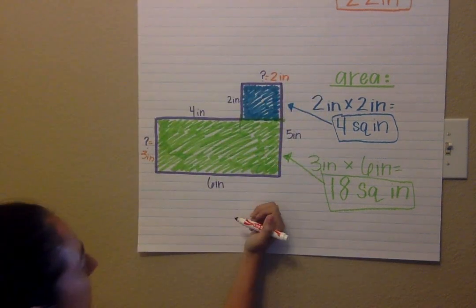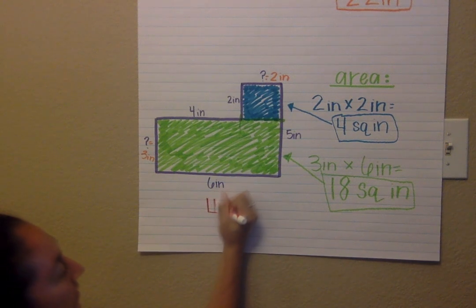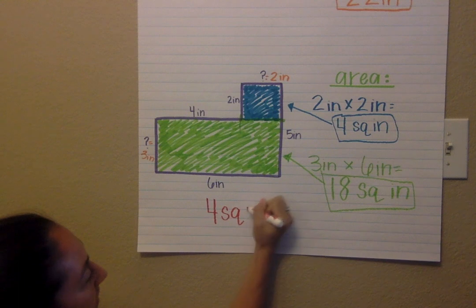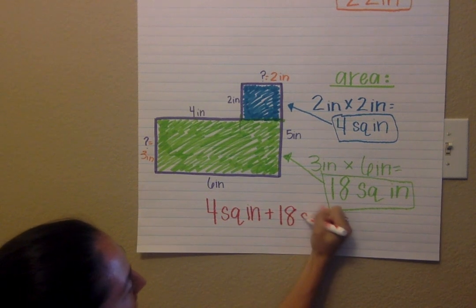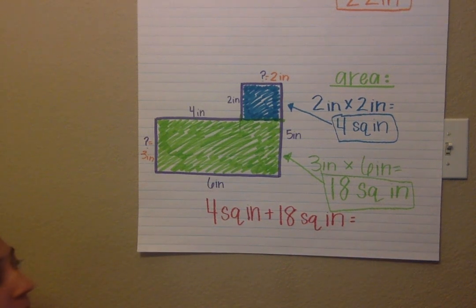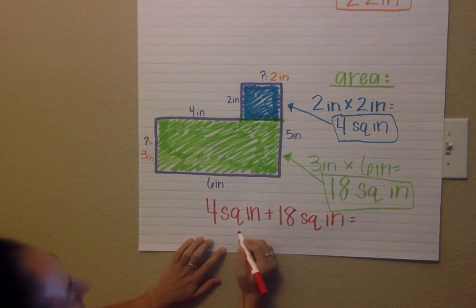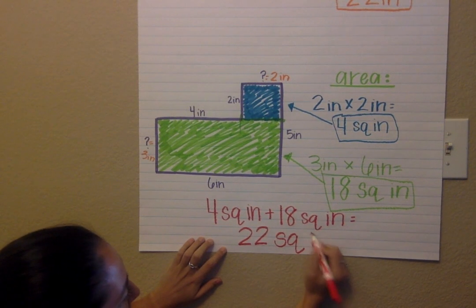I'm going to take four square inches and add that to 18 square inches, and 4 plus 18 is going to get me to a total of 22 square inches.